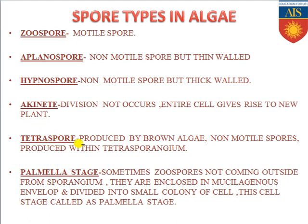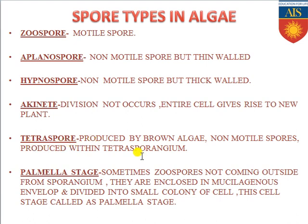Next is tetraspore. Tetraspore is a type of spore produced by brown algae. These are non-motile spores because they do not have any flagella, and they are produced within the tetrasporangium. So tetraspore is a spore produced within the spore sac known as tetrasporangium.